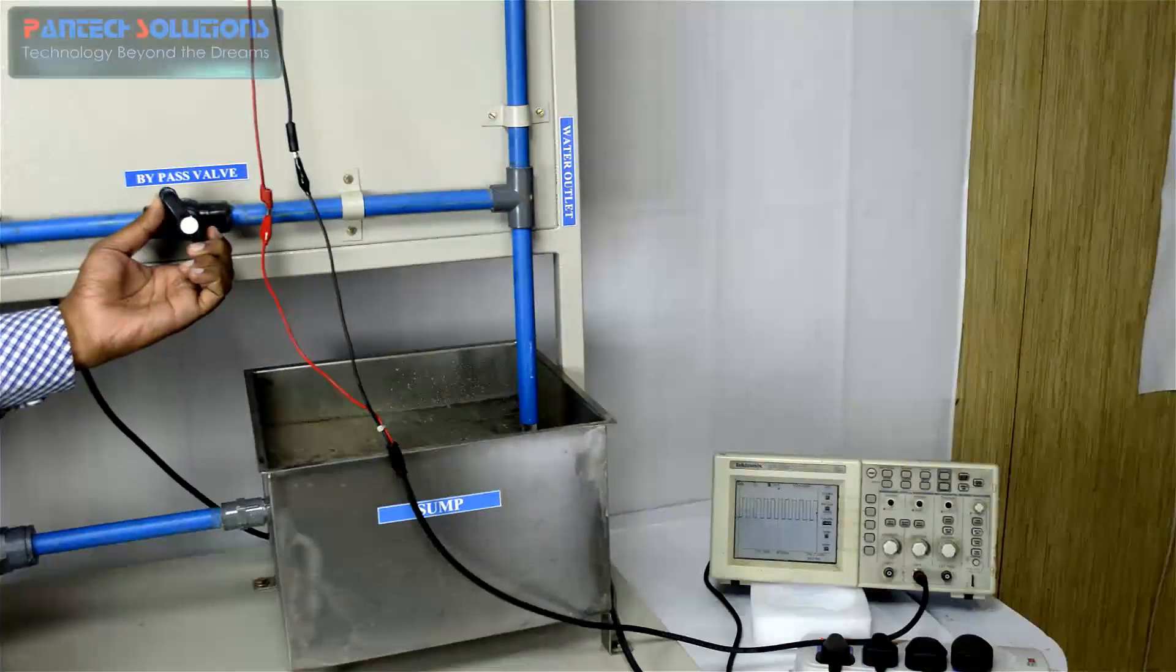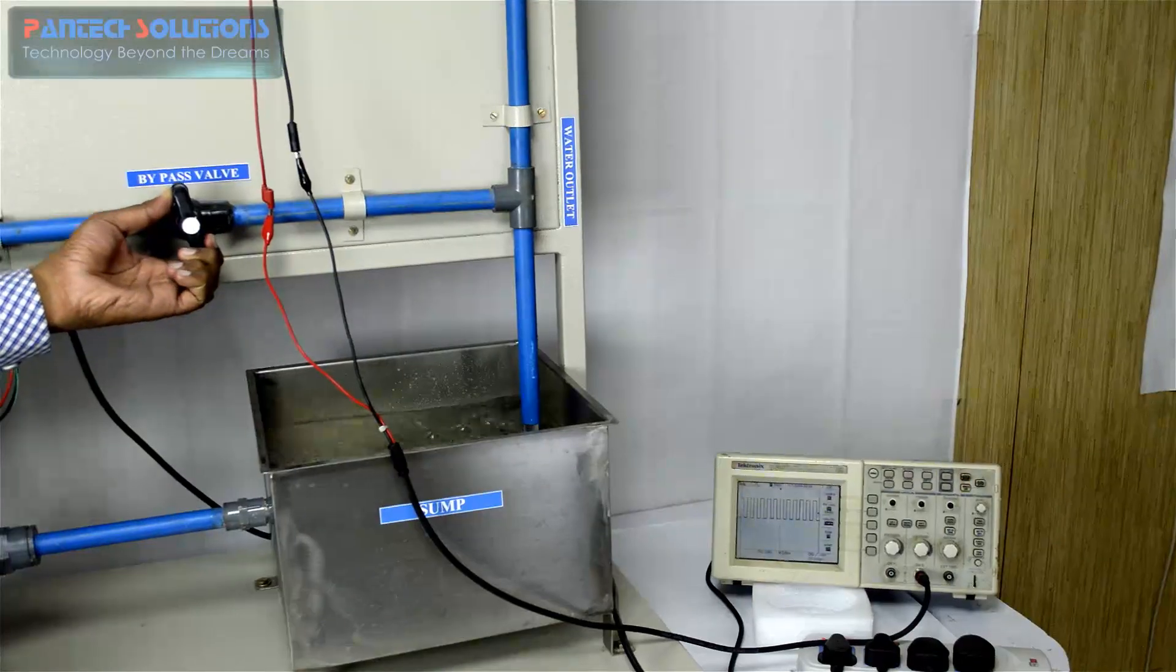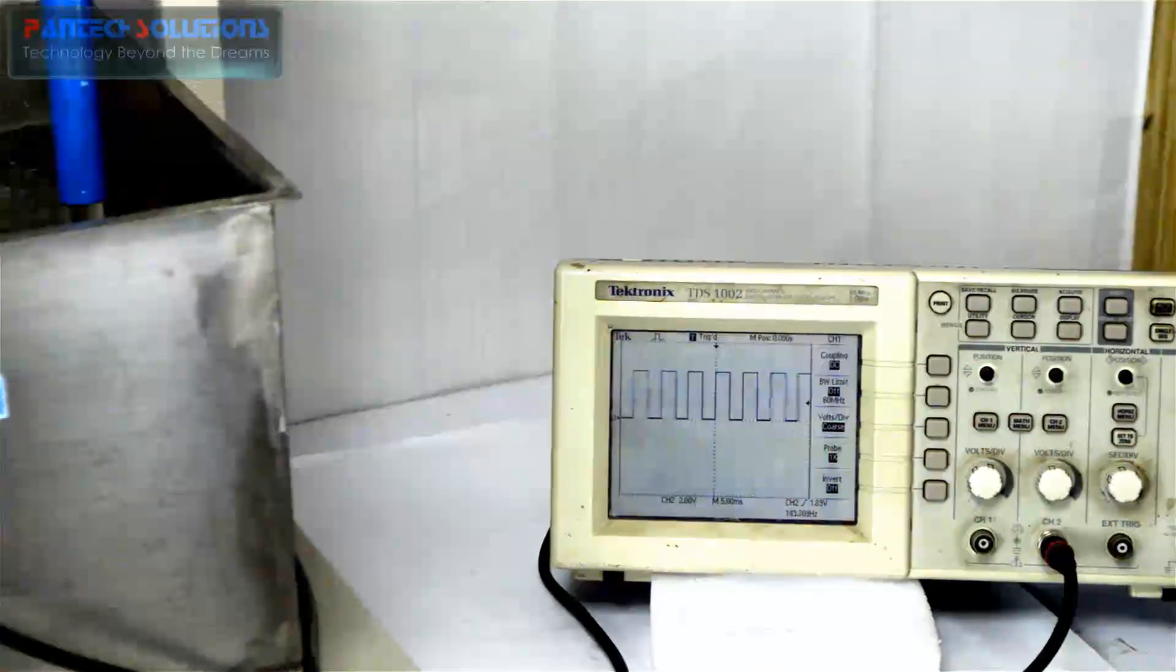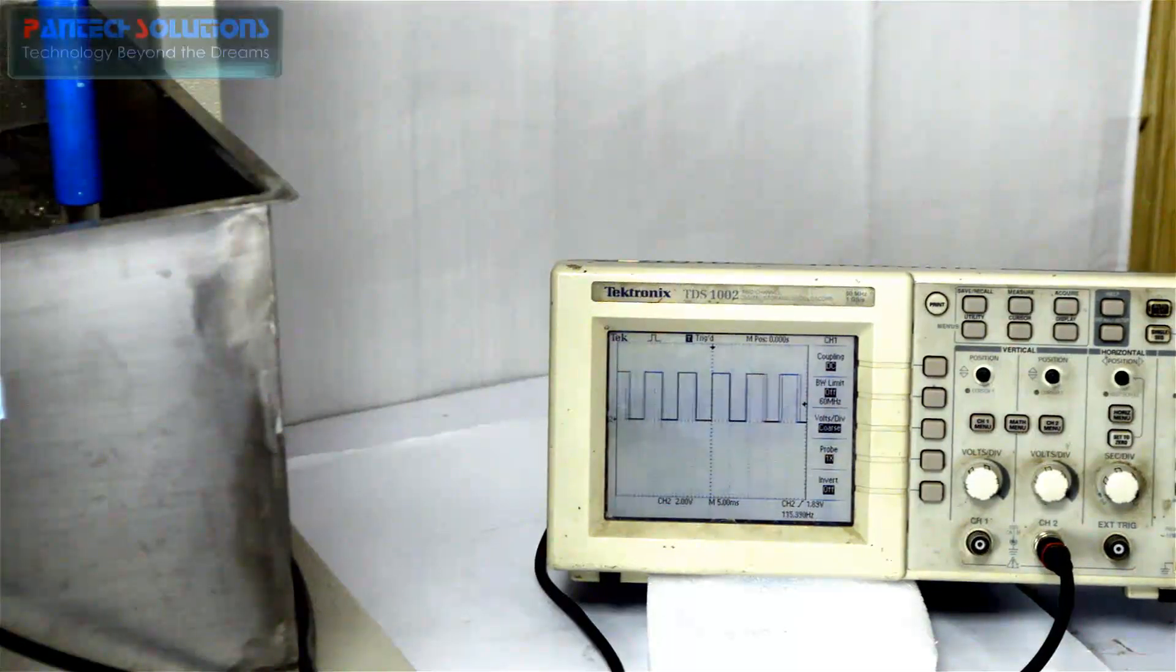By adjusting the bypass valve, the pulse variation can also be viewed from the flow sensor. That can be viewed using the DSO.